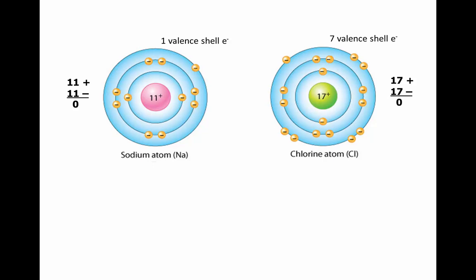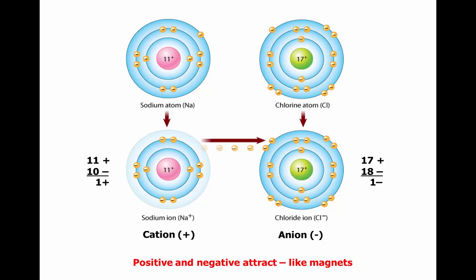Chlorine's electrons fill energy levels with two in the first and eight in the second, leaving its valence shell electron number as seven — again, not stable. So in order for these two atoms to achieve stability, sodium will donate its one lone valence shell electron to chlorine. Now sodium's valence shell is full at eight, as is chlorine's, having received the one electron it needed.